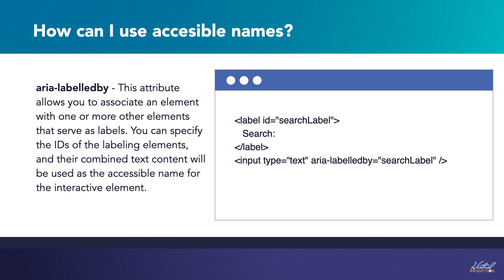The aria-labelledby attribute allows you to associate an element with one or more other elements that serve as labels. You can specify the IDs of the labeling elements, and their combined text content will be used as the accessible name for the interactive element. For example, the aria-labelledby attribute on an input element associates it with a label element using the label's ID. When a screen reader encounters the input field, it will announce the accessible name, such as 'search'.